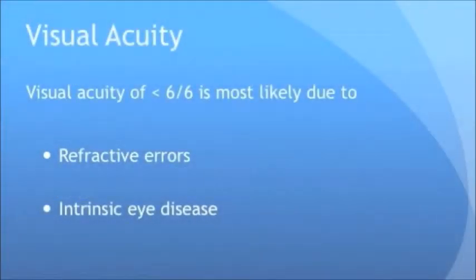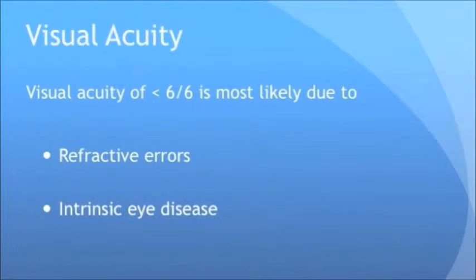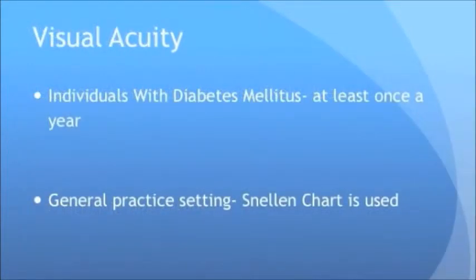Visual acuities of less than 6 over 6 may be due to refractive errors or intrinsic eye disease. While the former is correctable with eyeglasses, the latter is not. Visual acuity testing should be performed for all individuals with diabetes mellitus at least once a year as part of the routine screening for diabetic retinopathy.